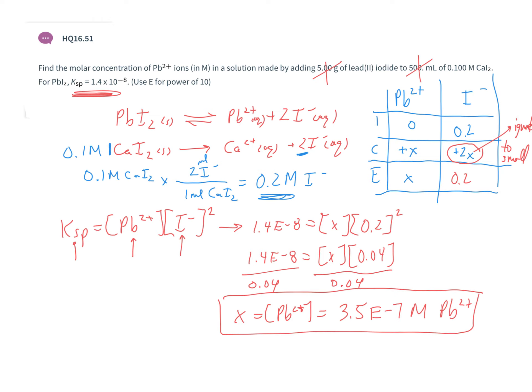This is a common ion effect calculation. Because calcium iodide — a strong electrolyte — is present in solution, it influences the equilibrium for the weak electrolyte lead iodide. The introduction of iodide from calcium iodide decreases the solubility of lead iodide, increasing the iodide concentration and pushing the equilibrium back to the left.